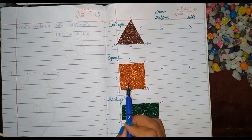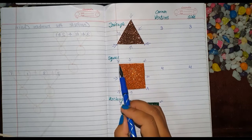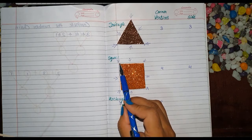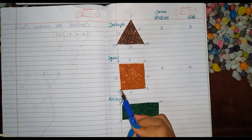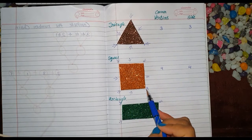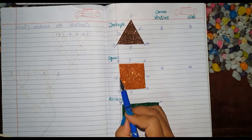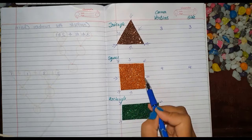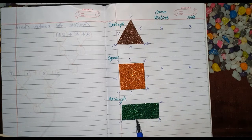What shape is that? This is a square. How many corners does a square have? 1, 2, 3, 4. 4 corners. How many sides does a square have? 1, 2, 3 and 4.